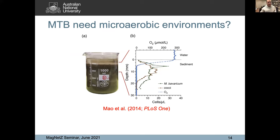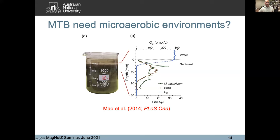This is a nice figure from the Munich group showing it very well. You've got the oxygen level in the water column, then in the sediment the oxygen level drops off. The MTB are still fairly happy at almost atmospheric levels, but they're happier when the oxygen levels drop off. There's an environment that's miles above sulfidic or reducing conditions where these guys are happy.